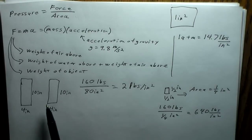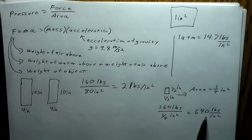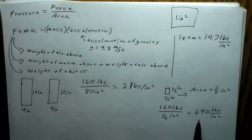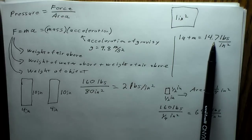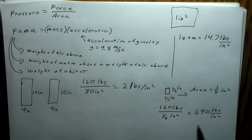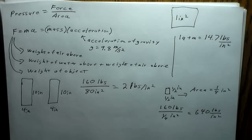That's why stepping on someone with pointy heels could seriously injure them — you're applying the same force over a much smaller area, so the pressure is much larger. This is 640 PSI compared to one atmosphere at 14.7 PSI — over 40 times atmospheric pressure. That's about 40 atmospheres pushing down on that little heel, which is why it hurts so much.